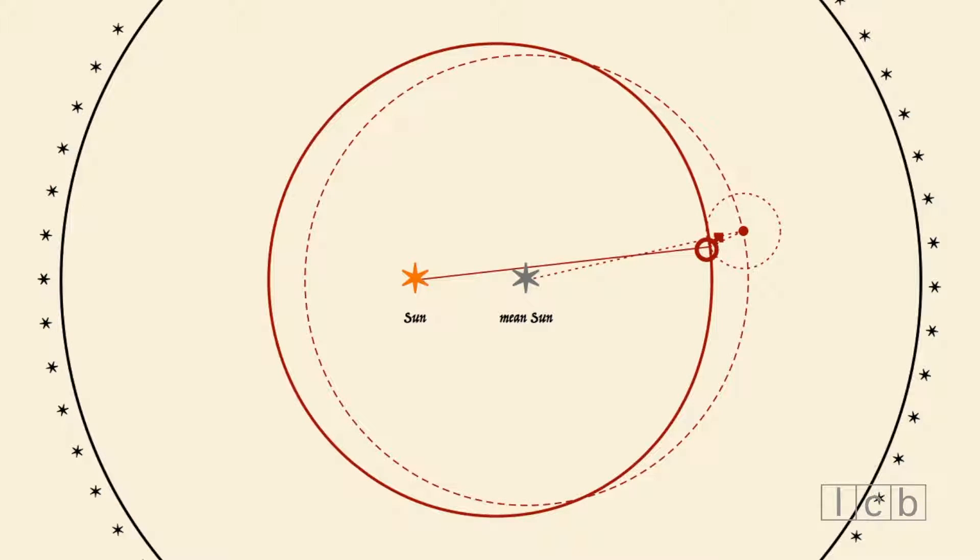The planet uniformly moves on a small circle called epicycle, whose center uniformly moves on a bigger circle called deferent circle, centered on the mean Sun.